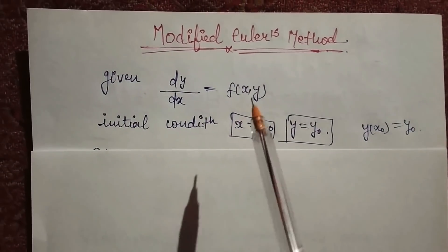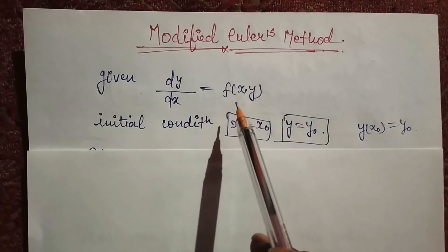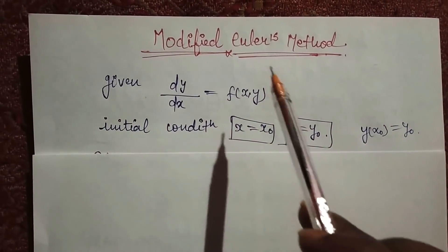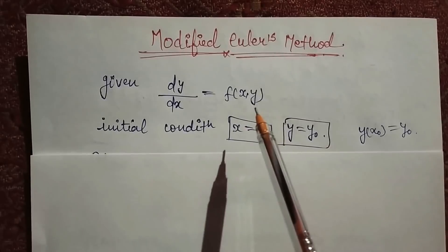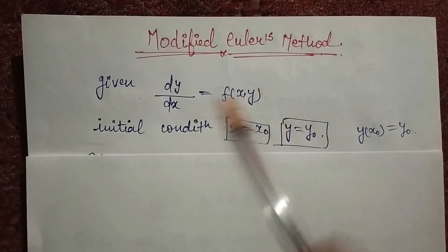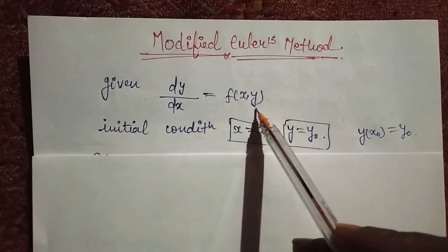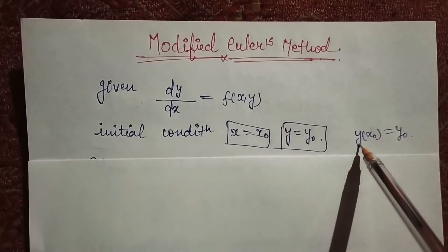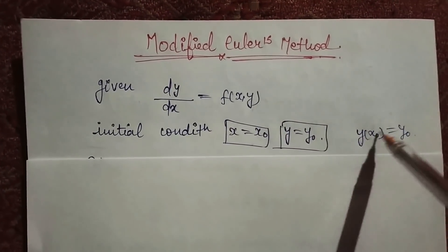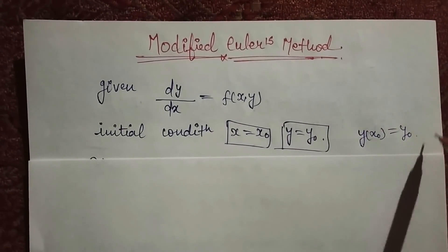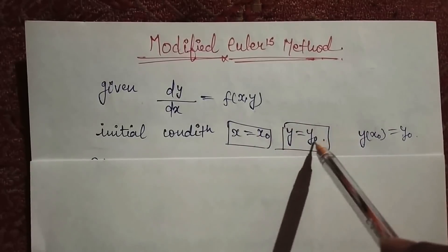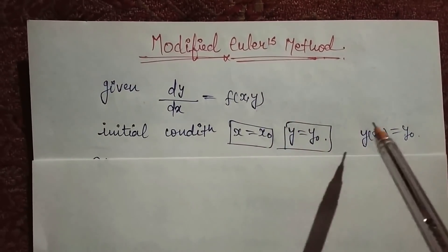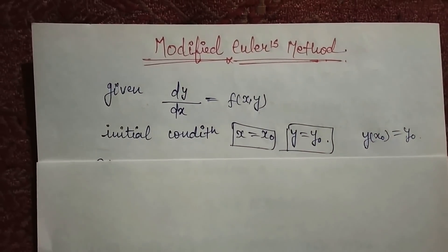This is your first rule. A differential equation will be given in your question. This is just like Euler's method — a differential equation will be given and one initial condition will be given. If the initial condition is not given in that form, then you will be directly given x0 and y0 values. These two steps are clear, so proceed to the next step.